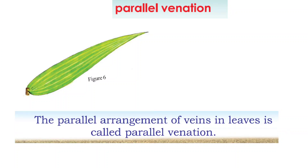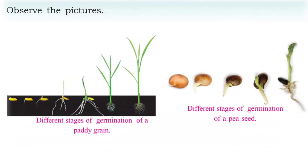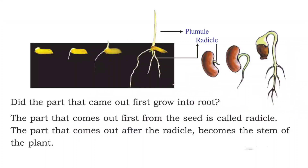These are the two types of venation: reticulate venation and parallel venation. This is important as it can come in the examination. Now observe this picture about germination — it shows the different stages of germination of a seed. When a seed starts to germinate, the first part that comes out is called the radicle, and after that comes a part called the plumule.